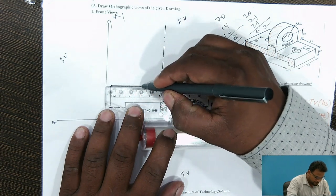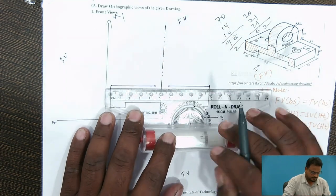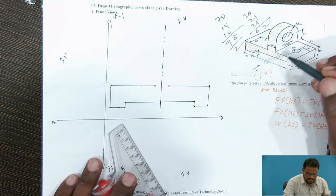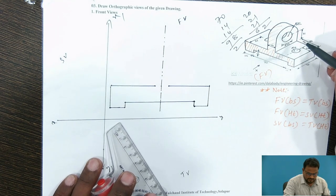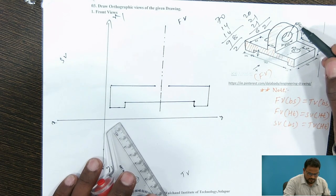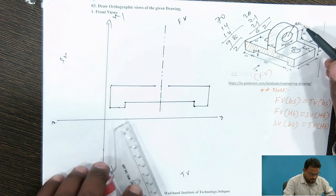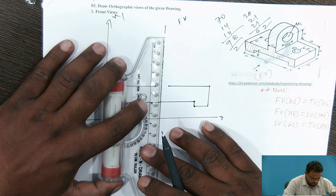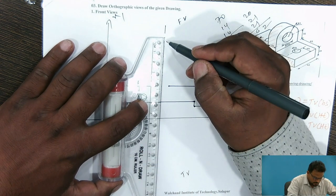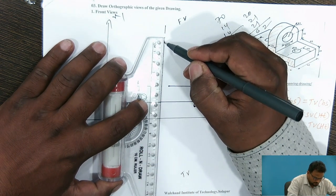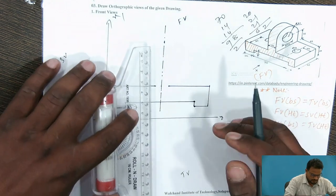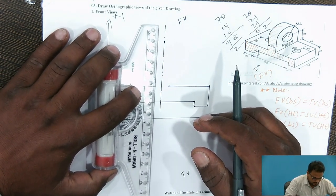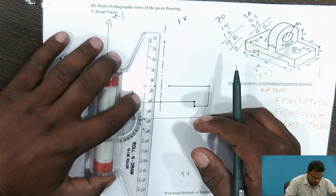From the axis line, you can see the block. The width is 14 mm, so we are going to take 7 mm each side from the axis. From here, we are going to take 42 mm. We are going to complete our block.